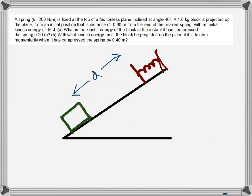This object has a mass of 1 kg and it is on an inclined slope with an inclination of 40 degrees. This block is pushed from here and there is a spring. The distance from the block's front edge to the spring is 0.6 meters, which is d.